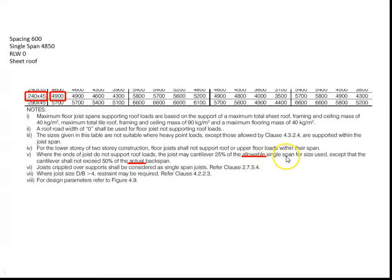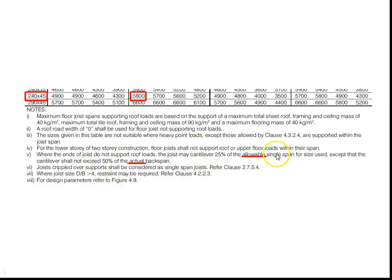Note that this specifies 'allowable single span.' If we were looking at a continuous span joist, the allowable span might be 5.8 metres, but we're still using the equivalent single span figure when working out the cantilever. Most of the time that's not an issue — most cantilevers aren't very big. But you may occasionally come across a situation where you need the maximum allowable span, so it's very important to read through this note and all the notes under your span table.